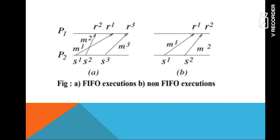This diagram shows FIFO execution and non-FIFO execution. The first diagram is FIFO execution and the second is non-FIFO execution. If message 1 is sent before M2, it should also be received in that order — that is, send event S1 happens before S2, which means receive event R1 should also occur before R2.